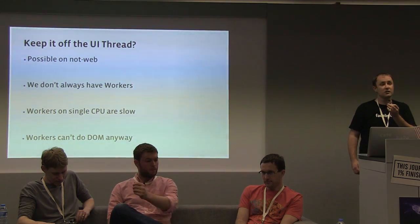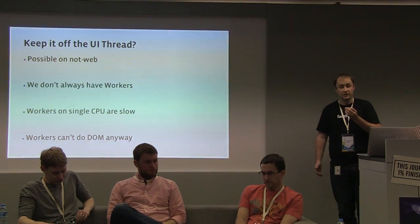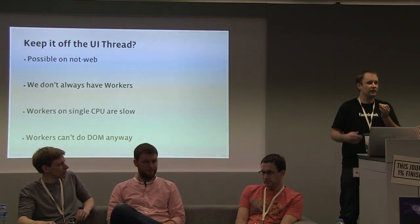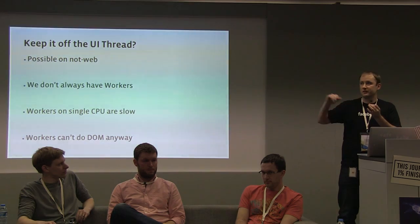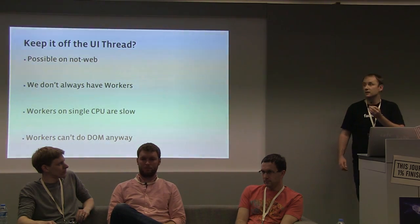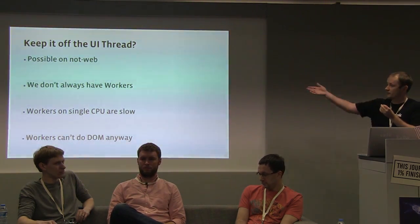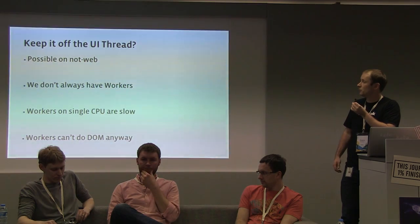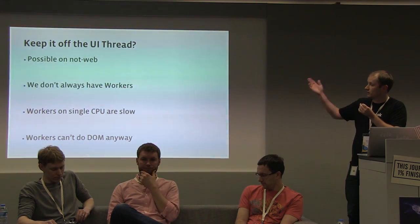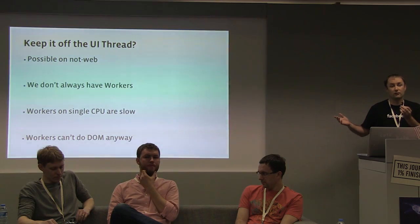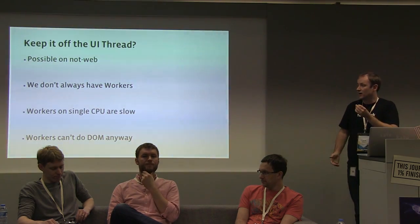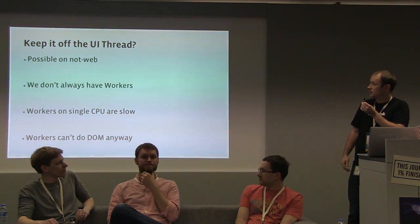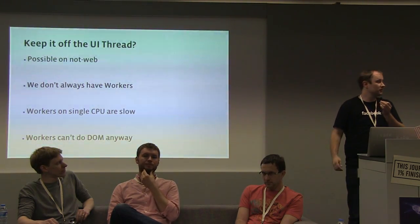We'd like to keep DOM work off the UI thread. This is possible in native — the Facebook iOS app has a completely separate thread that measures and renders everything, then passes it over. We can't do that on web. One reason is we don't always have workers — on the latest iOS and Android we do, but not always. Also, workers on a single CPU are slow; on an iPhone 4 with a single core you're not really getting any gain. And anyway, workers can't do DOM, so this doesn't really help.